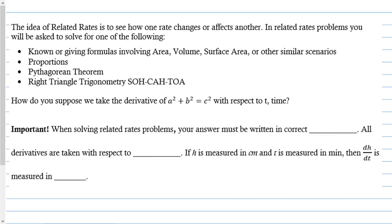The idea of related rates is to see how one rate changes or affects another. In these kinds of problems, you're going to be expected to know formulas for area of a square and a circle, triangles, volume of cubes and spheres and cones, surface area of cubes — things that you have previously done but maybe haven't done in a while and have forgotten the formulas for. They do provide you with some formulas, though, sometimes.